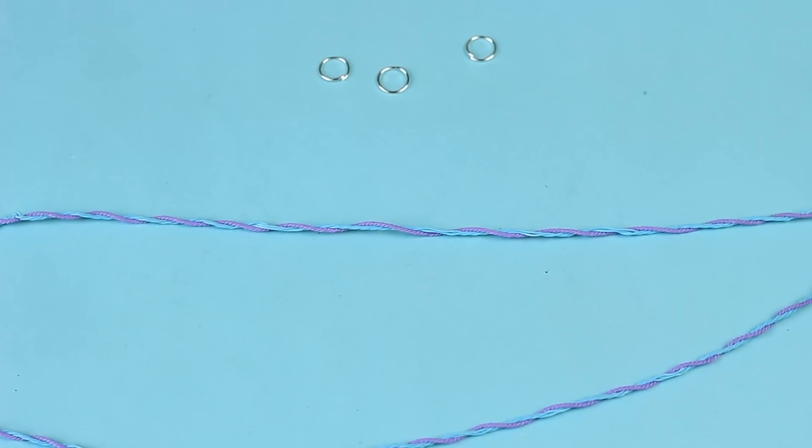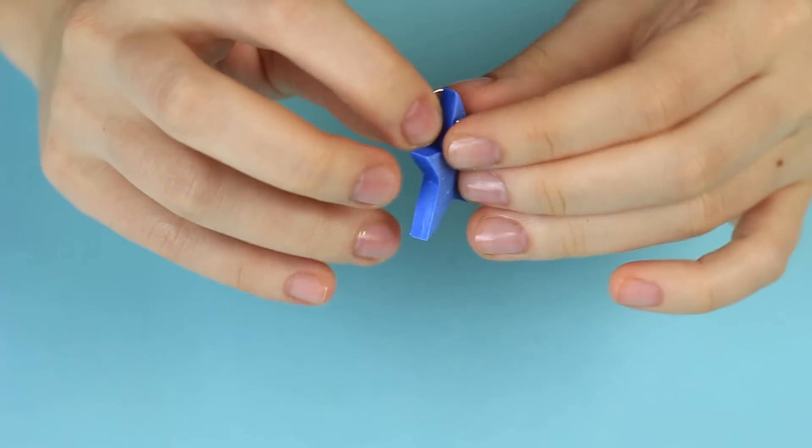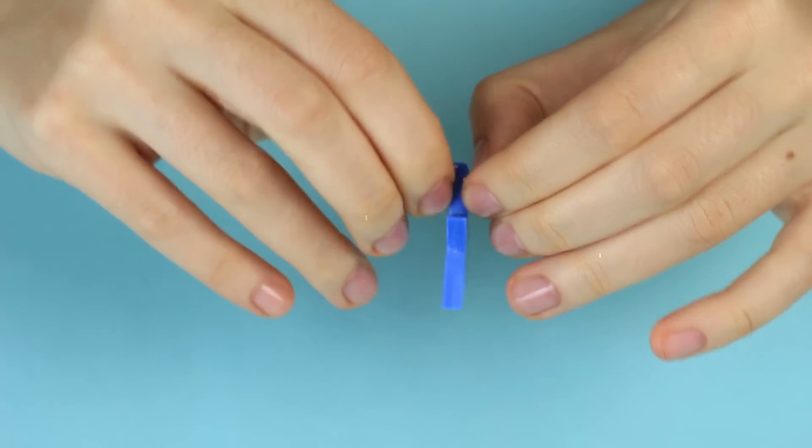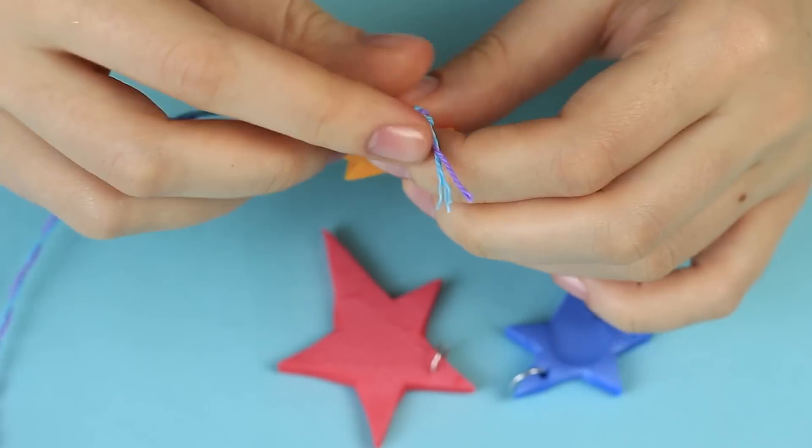Let's assemble the necklace. Open a jump ring. Thread a star and close the ring. Put on rings on the other charms. Thread the cord rope.